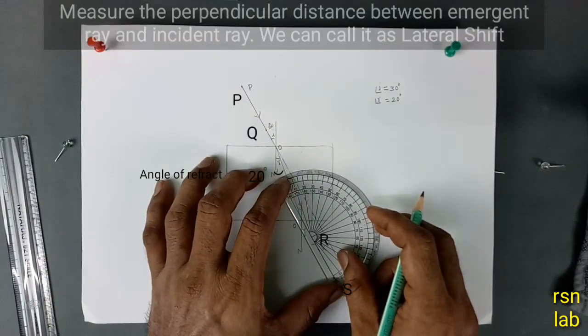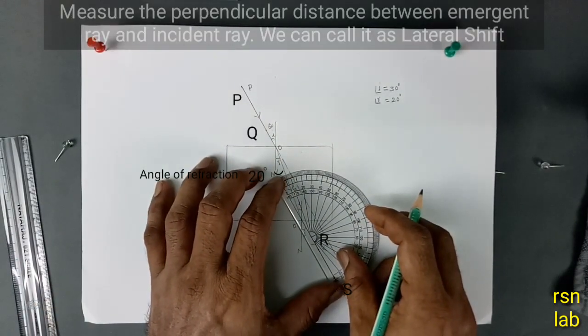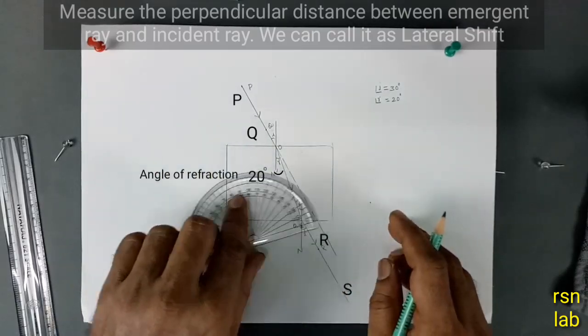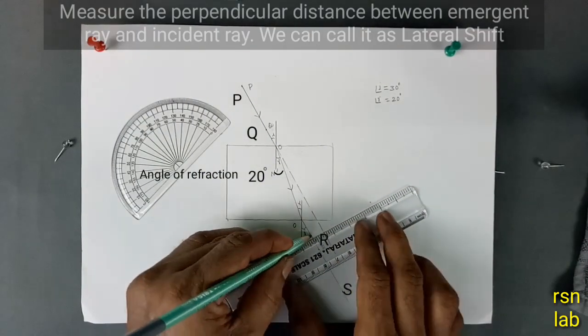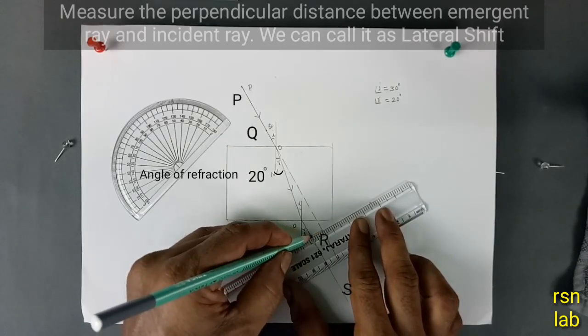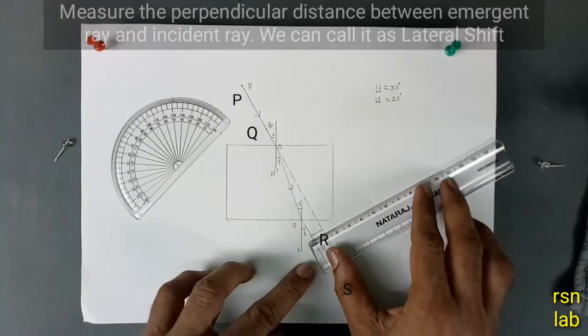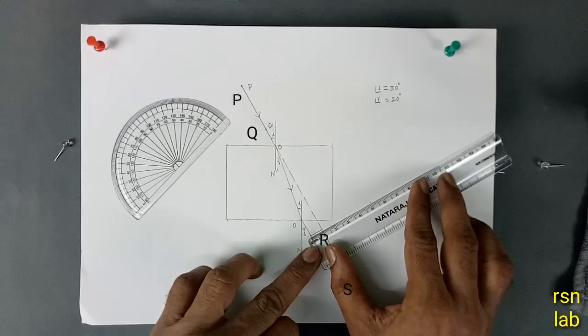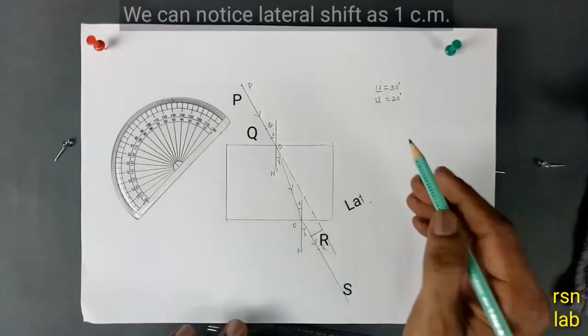Measure the perpendicular distance between emergent ray and incident ray. We call it as lateral shift. We can notice lateral shift as 1 cm.